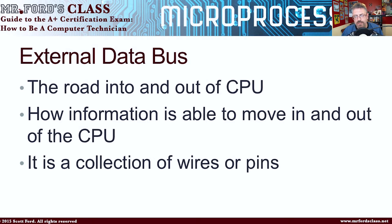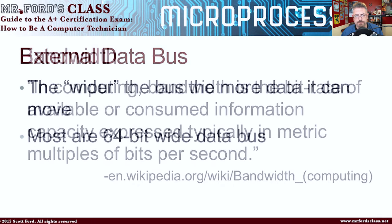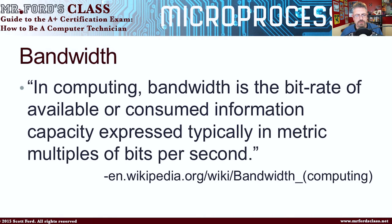Now, it's obviously not a bunch of nerves — not yet. Organic computing is something from Star Trek. But right now it's just a collection of wires or pins. The wider the bus is, the more data that can move into and out of it faster. Most are currently 64-bit wide data buses.